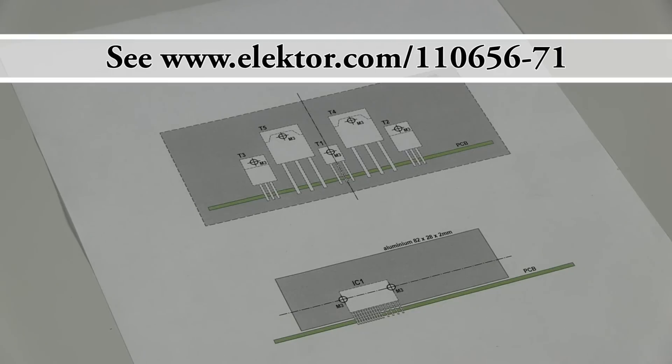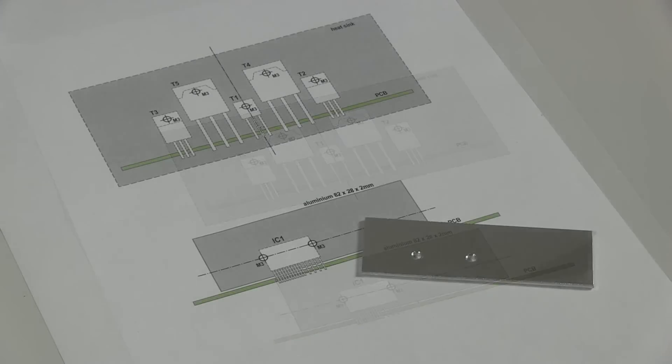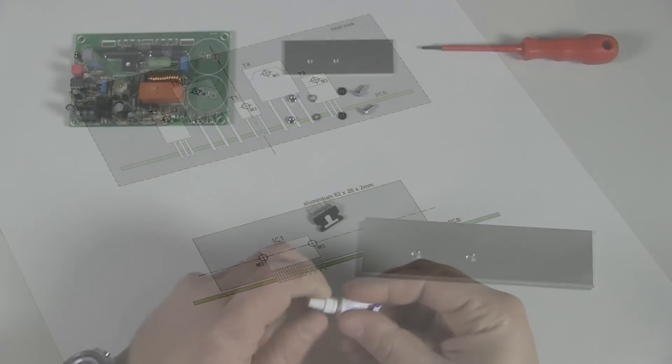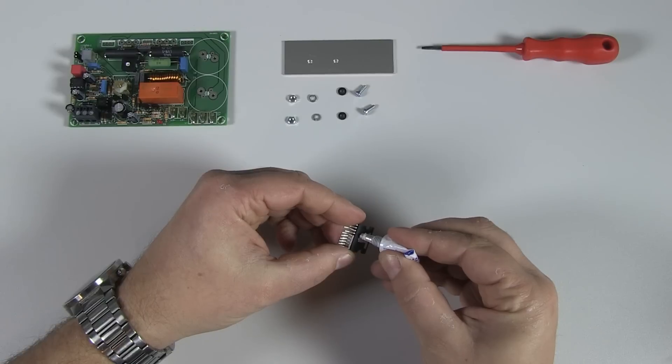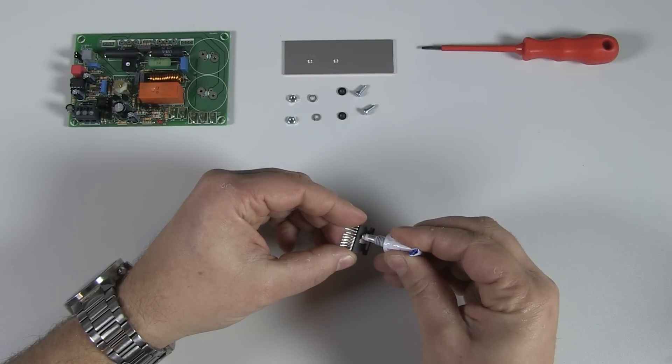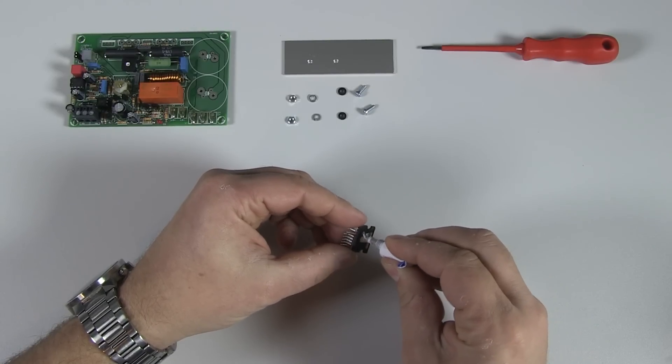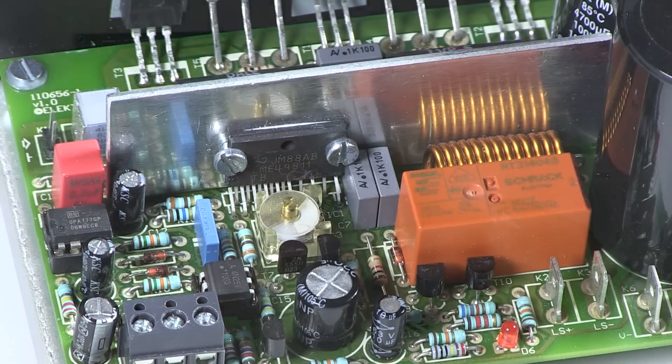This template, available as a free download from the Elektor website, helps you to produce the 28x82mm heatsink for the driver IC. Don't forget to apply some heat conducting paste on the driver IC for better heat conduction, before attaching the heatsink to the driver IC with two 3mm screws.